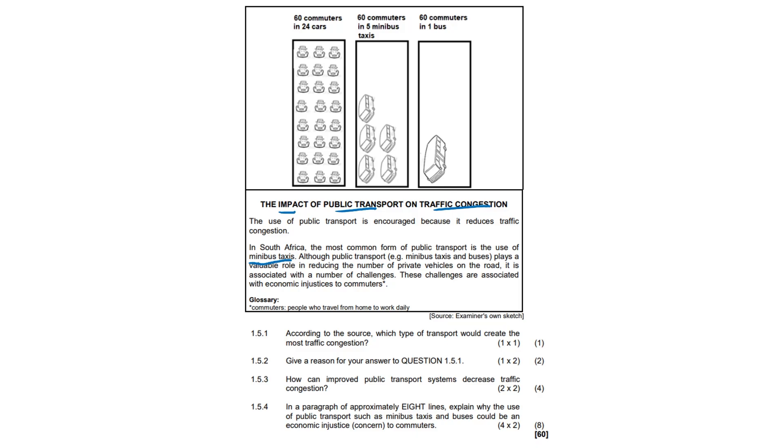1.5.1 According to the source, which type of car would create the most traffic congestion? Cars or private vehicles. Because there's 60 commuters here in 24 cars, but there's 60 commuters here in five minibus taxis. The cars are a lot smaller than the taxis and 60 commuters in a bus. So are they encouraging the use of public transport here?